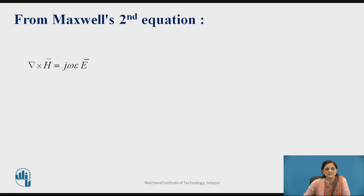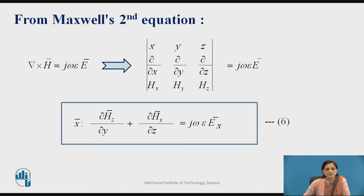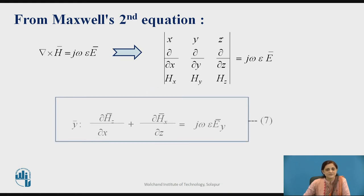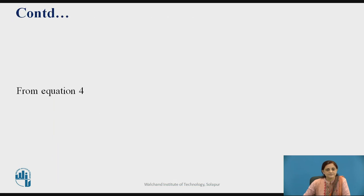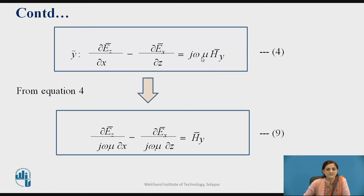Now consider the second Maxwell equation. You solve this by the curl operation on H-bar, writing equations for the x, y, and z components as equation numbers 6, 7, and 8. From equation number 4, the y component of the magnetic field exists. From this equation, you can find Hy by transferring j-omega-mu to the LHS side, giving equation number 9.